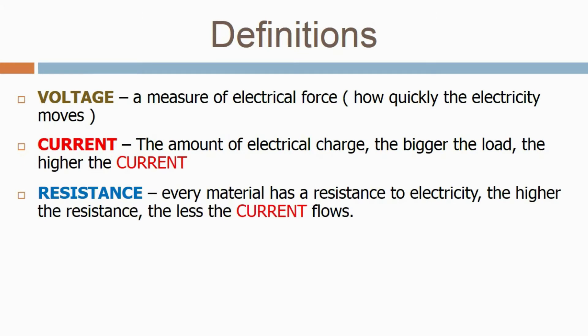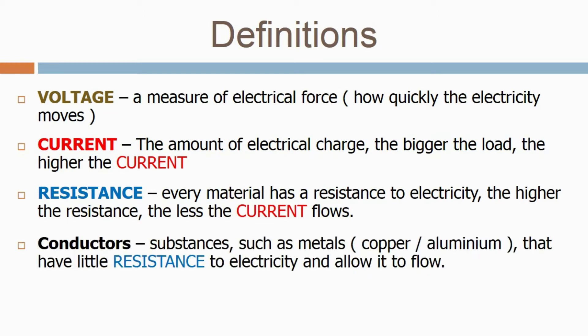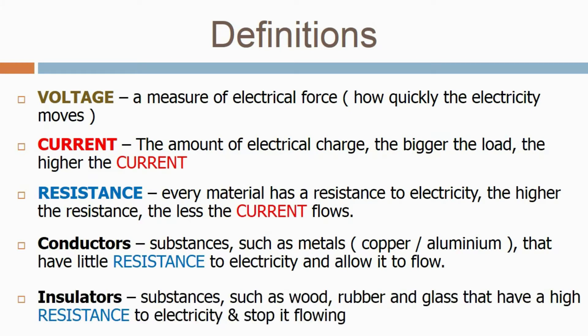Next we have the resistance. Every material has a resistance to electricity. The higher the resistance, the less the current flows. Next we have the conductors. They're substances such as metals, either copper or aluminium, that have little resistance to electricity and allow it to flow. Finally, the insulators. These are things such as wood, rubber, or glass that have a high resistance to electricity and stop it flowing.